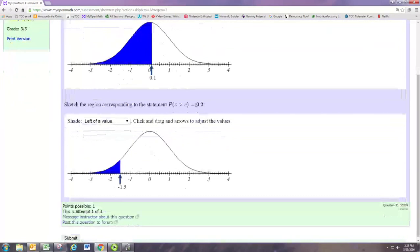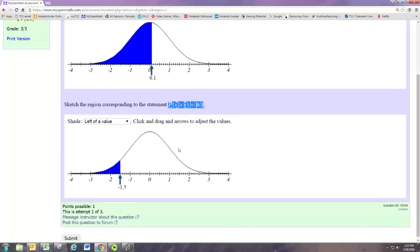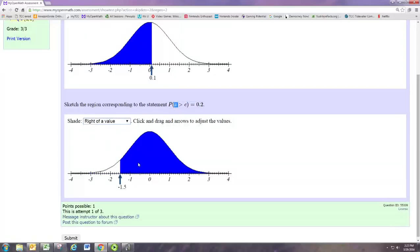For the second part we know the area, the probability is 0.2, and we need to know where we need to put the arrow so that the value of the random variable greater than that number is going to be 0.2. So c is the location of this arrow. Since we're looking at values of the random variable greater than c, we need to shade to the right of a value.